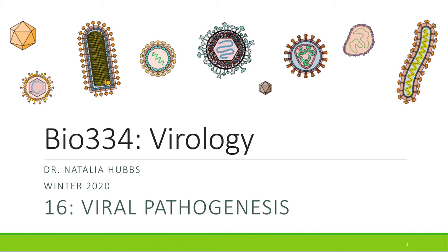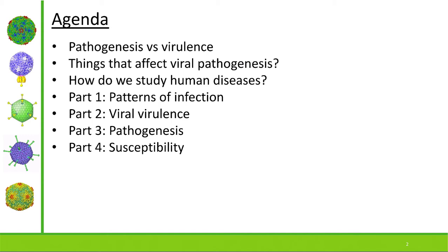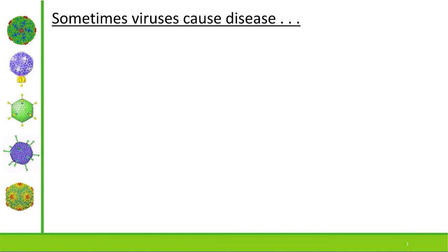Hello, good morning. Welcome back to topic 16. Today we're going to talk all about viral pathogenesis. This topic is very relevant to what is going on currently during world events. We're going to define pathogenesis and virulence, compare and contrast them, think about what affects viral pathogenesis, how we study human diseases, and then split the rest of this topic into four parts: patterns of infection, viral virulence, pathogenesis, and susceptibility.